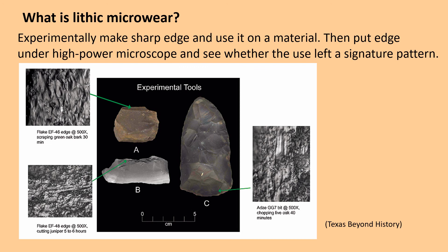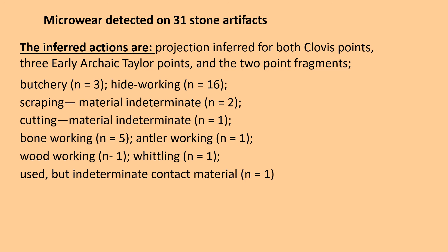So what is lithic microware? You experimentally make a sharp edge and use it on material, then put that edge under a high-power microscope and see whether the use left a signature pattern, also keeping track of how long you performed that use. They detected microware on 31 stone artifacts and were able to infer a number of actions. Both Clovis points, the three Early Archaic Taylor points, and the two-point fragments had all been used for projection.